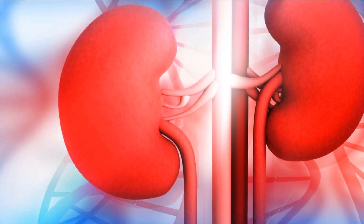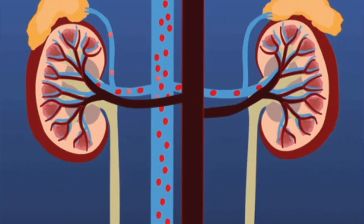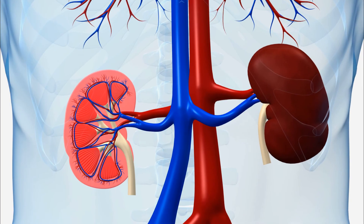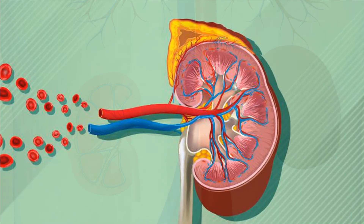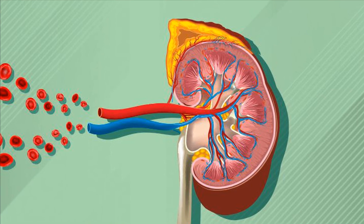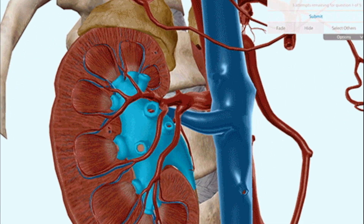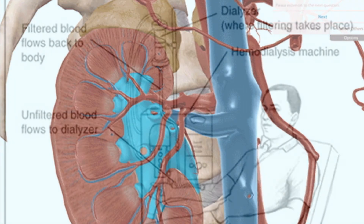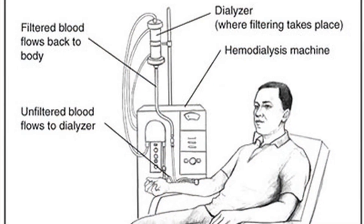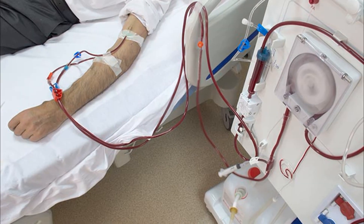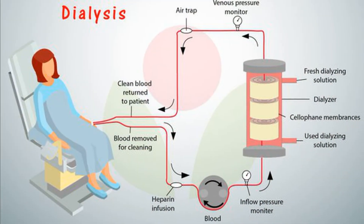What happens when kidneys fail? Sometimes one or both kidneys may stop working properly — this may happen if they become infected, seriously injured or damaged. A person can manage with just one kidney, but if both fail, the blood soon becomes loaded with urea and other waste substances, and if nothing is done the person may die. One of the treatments is to use a machine which filters and cleans the blood. This process is called dialysis. A person with complete kidney failure needs regular dialysis done in hospital to lead a normal life.